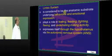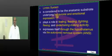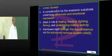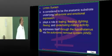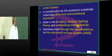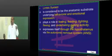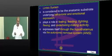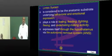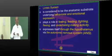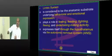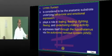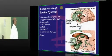The limbic system is the typical anatomical substrate underlying behavioral and emotional expression. The feeling, the feeding, the fighting, the fleeing, and undertaking the mating — they are all because of the limbic system. The limbic system also has close interconnectivity with the hypothalamus and ramifications into the autonomic nervous system, so the hypothalamus, autonomic nervous system, and limbic system are all associated with one another.